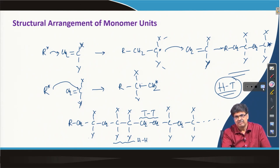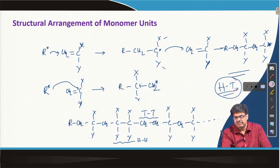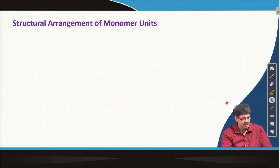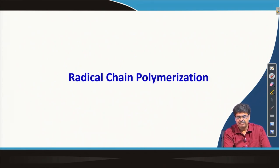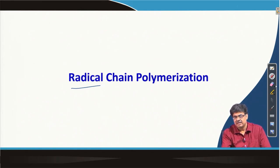There are exceptions which we are not discussing in this introductory course, but as you can understand, in chain growth polymerization it is mostly the head-to-tail arrangement that happens. Now we will look at the mechanism of radical polymerization — we will focus on radical chain polymerization and come back to cationic or anionic polymerization briefly in a later lecture.